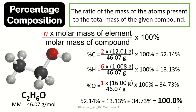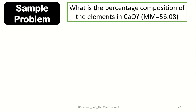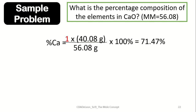Now let us have another example: what is the percentage composition of the elements in calcium oxide, which has a molecular mass of 56.08? Beginning with calcium — one atom multiplied by its atomic mass of 40.08, divided by the molecular mass of 56.08 multiplied by 100% — which is equivalent to 71.47%.